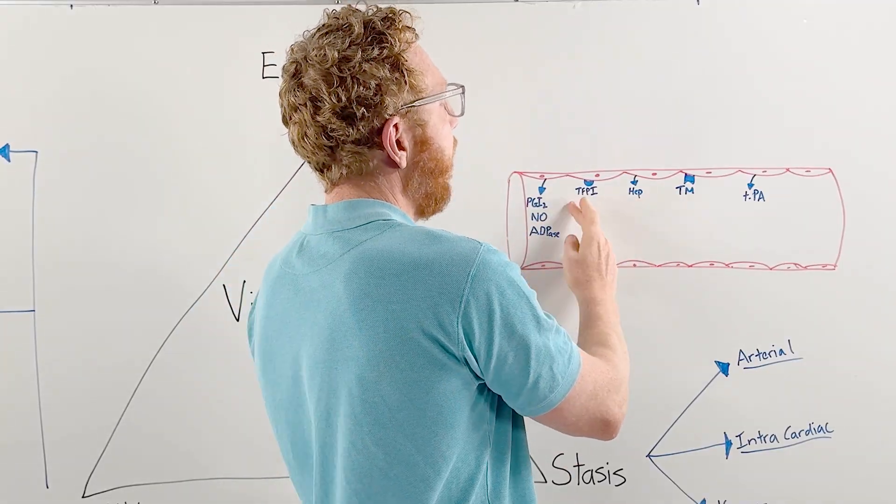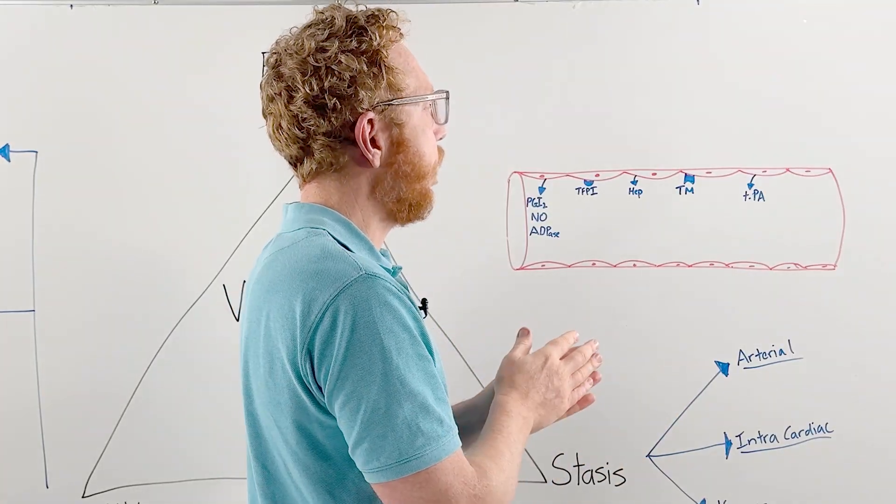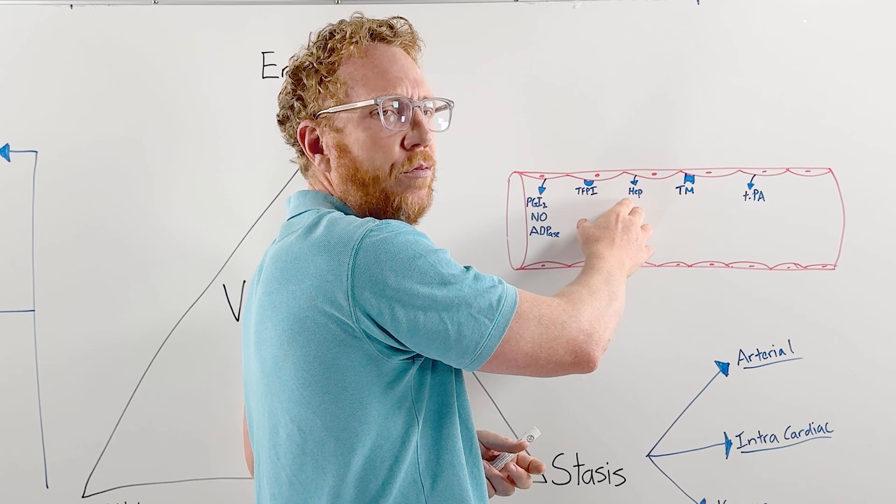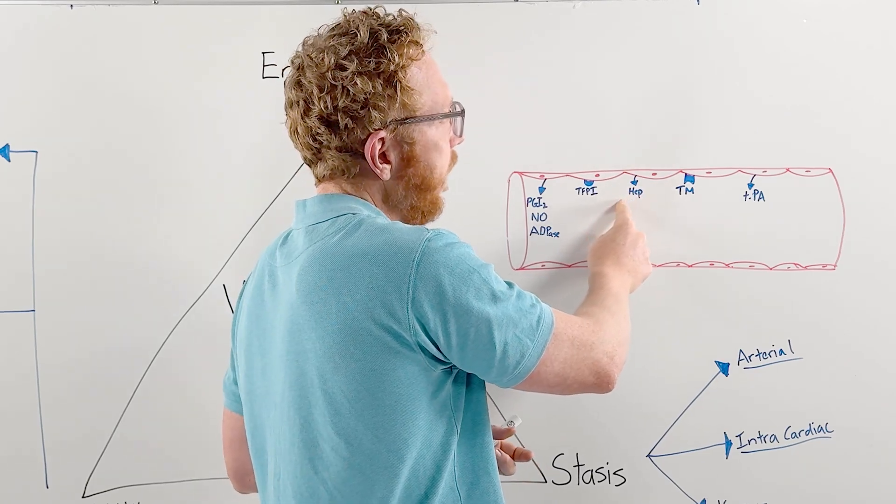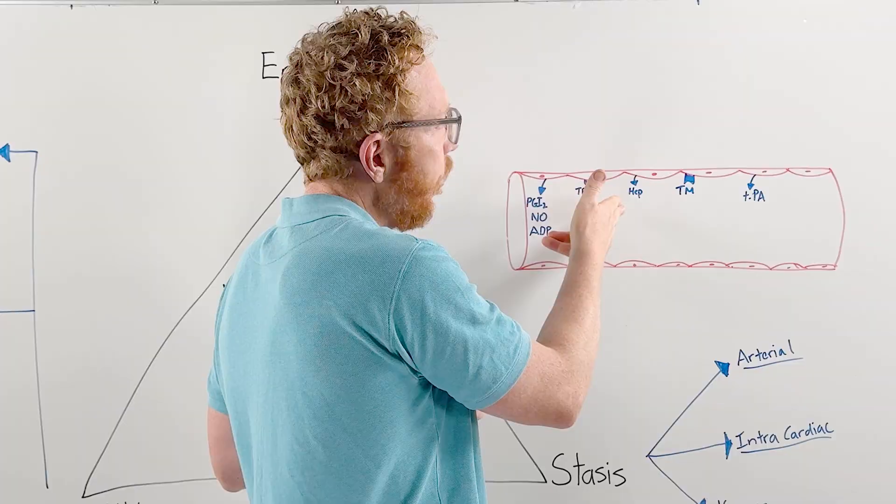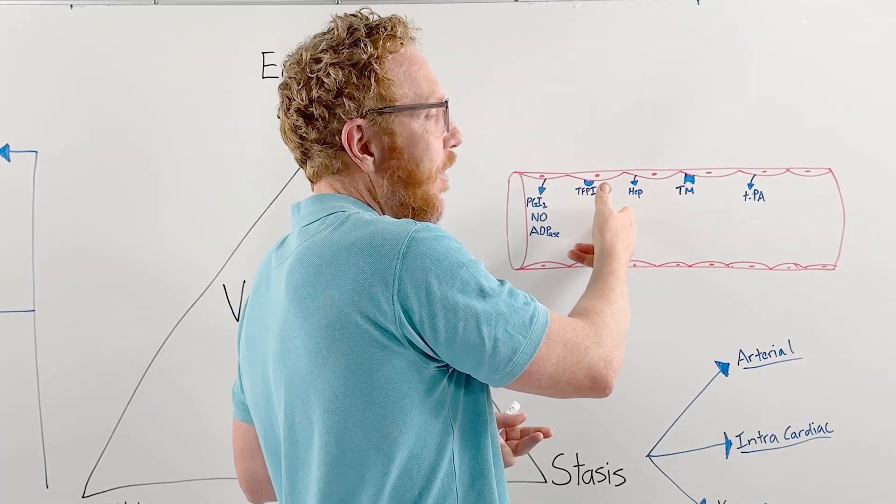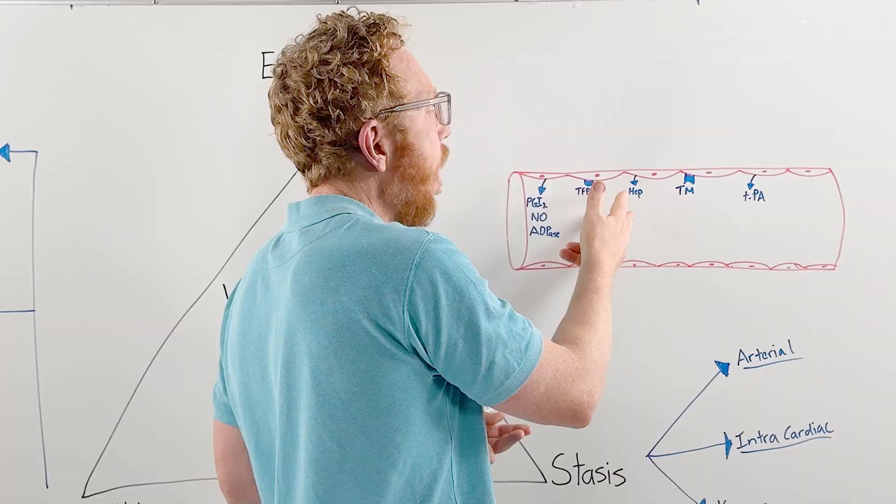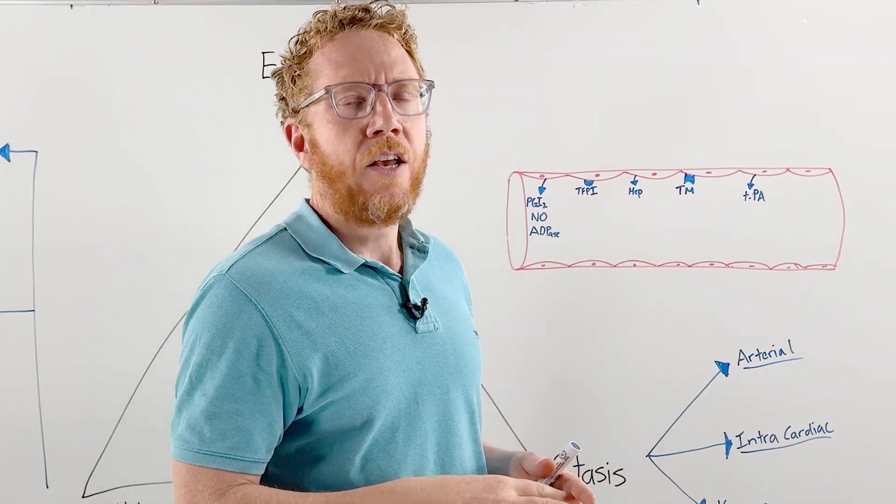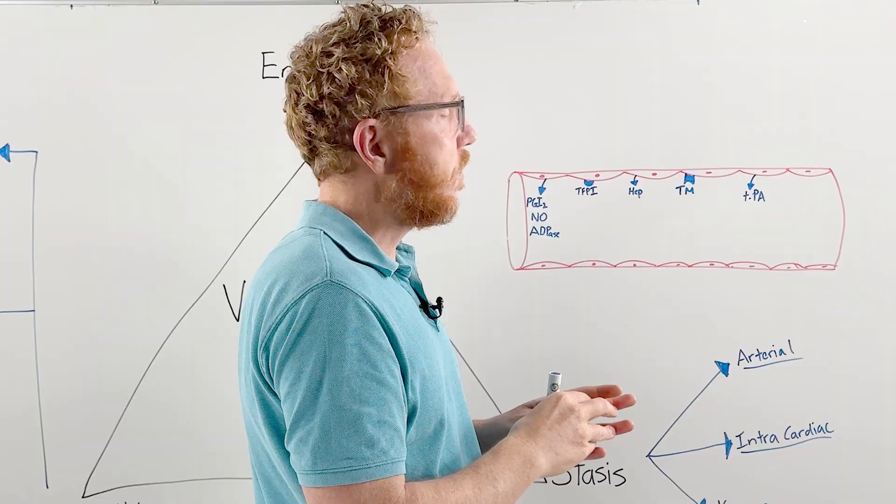It releases prostacyclin, nitric oxide, and adenosine phosphatase. These keep the blood vessel open and stop platelets aggregating. The next set of chemicals prevent the activation of the clotting proteins. The endothelium releases heparin sulfate, which binds with antithrombin-3 and goes around chopping up thrombin, clotting protein 10, and clotting protein 9.